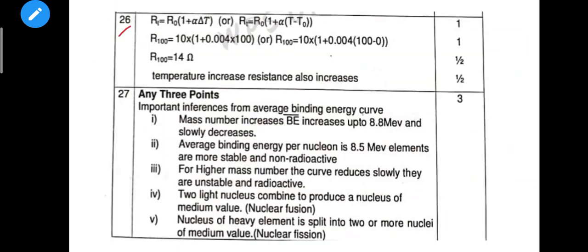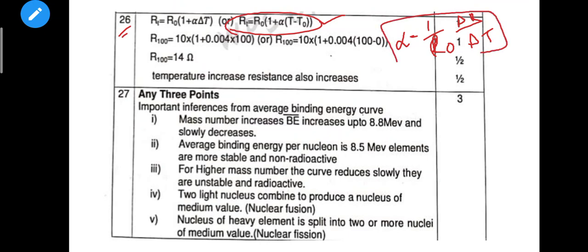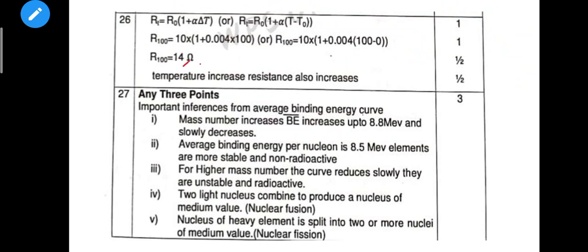Question 26 is an important sum. The formula is: alpha = (1/ρ)(Δρ/ΔT). Any relevant formula can be applied — formula is 1 mark. Next, substitute — 1 mark. Answer with unit is also awarded marks.